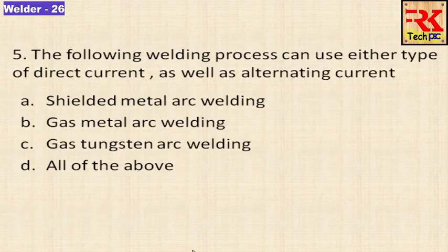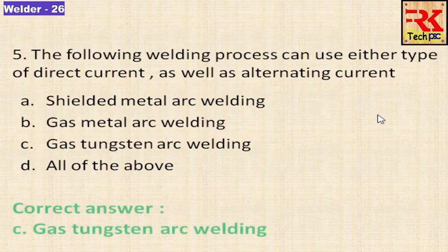The following welding process can use either type of direct current as well as alternating current. In the welding procedure, we are talking about DC and AC. The answer is gas tungsten arc welding, which uses both AC and DC.